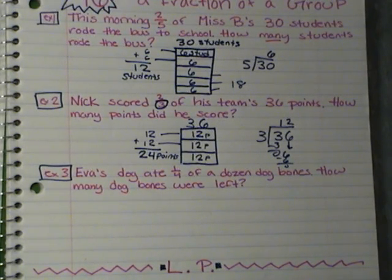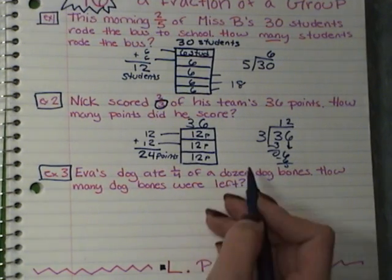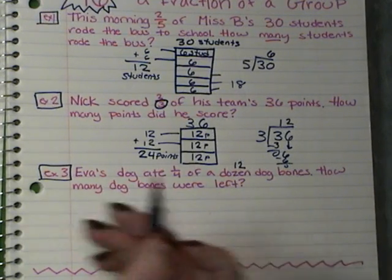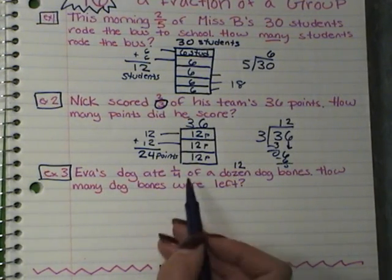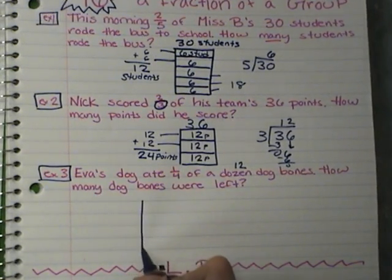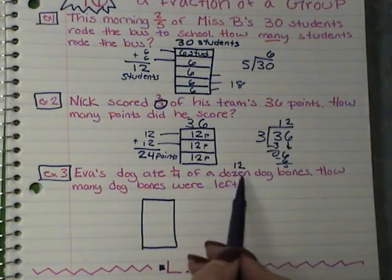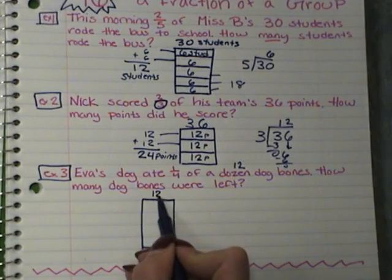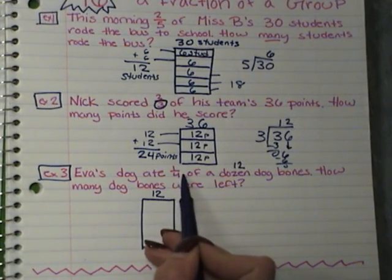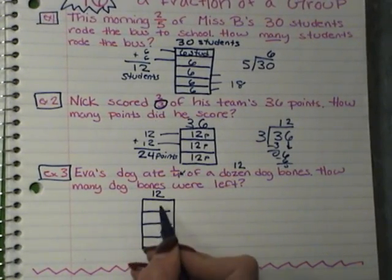The last problem says: Eva's dog ate one-fourth of a dozen dog bones. How many dog bones were left? A dozen is 12, so I'll write 12. My denominator is four, which tells us we're out of four. I'm going to draw my rectangle and divide it into four sections.